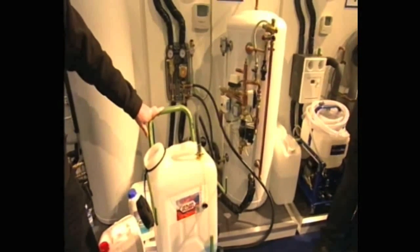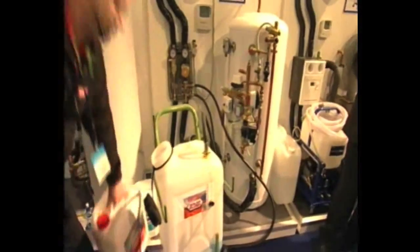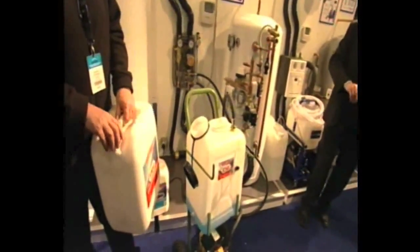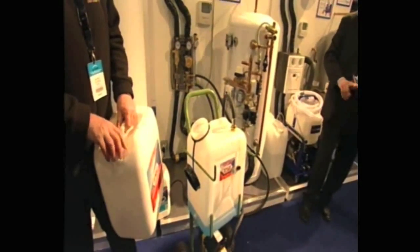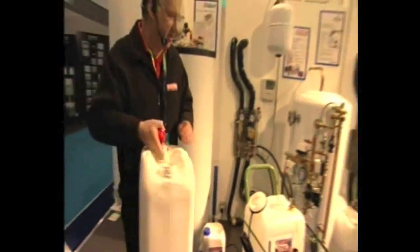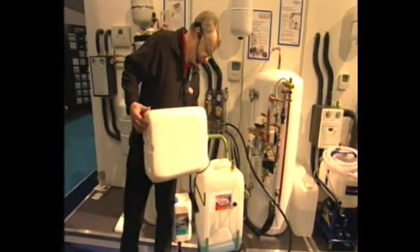What Bob's going to demonstrate is how we get the fluid in there, because it's very important that we use a particular fluid with certain properties, which Bob will explain, and also that we take out all of the air at this stage. So we've got a fluid from Sentinel here, Sentinel R100. We've put some of that into the flushing machine, the flushing cart.